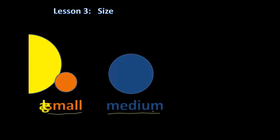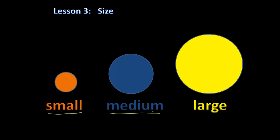The next object is this, and it's also a circle. But this object is bigger than the last and bigger than the other one. So of these three objects, this last object is large. So we have small, medium, and large.